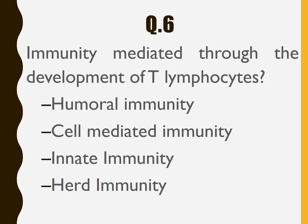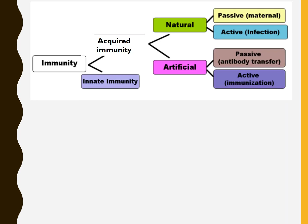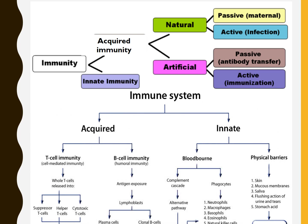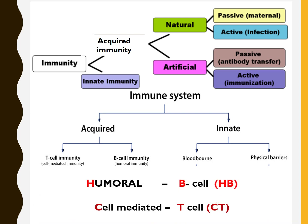Question number 6: Immunity mediated through the development of T-lymphocytes is — humoral immunity, cell-mediated immunity, innate immunity, or herd immunity? The answer is cell-mediated immunity. Remember: humoral immunity is acquired through B-lymphocytes — code HB. Cell-mediated immunity is acquired through T-lymphocytes — code CT. Remember HB and CT to get this answer.